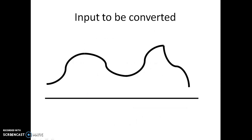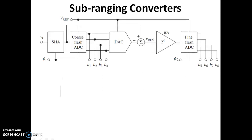Assume that this is the input voltage which is to be converted and digitized. In the previous videos, using sub-ranging converters we can effectively reduce the number of comparators required in a flash ADC. We have a sample and hold circuit, a coarse flash ADC which generates the first part of the digital output, and its residue is obtained by comparing with the DAC output. The original input is amplified by a residue amplifier, and then we get the remaining bits using the fine flash ADC.